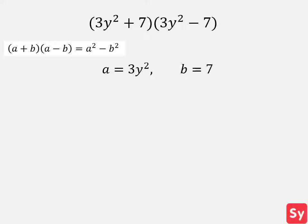We plug these values back into the identity and get 3y squared plus 7 times 3y squared minus 7 equals 3y squared squared minus 7 squared. We simplify this and get 9y to the fourth minus 49, which is our answer.